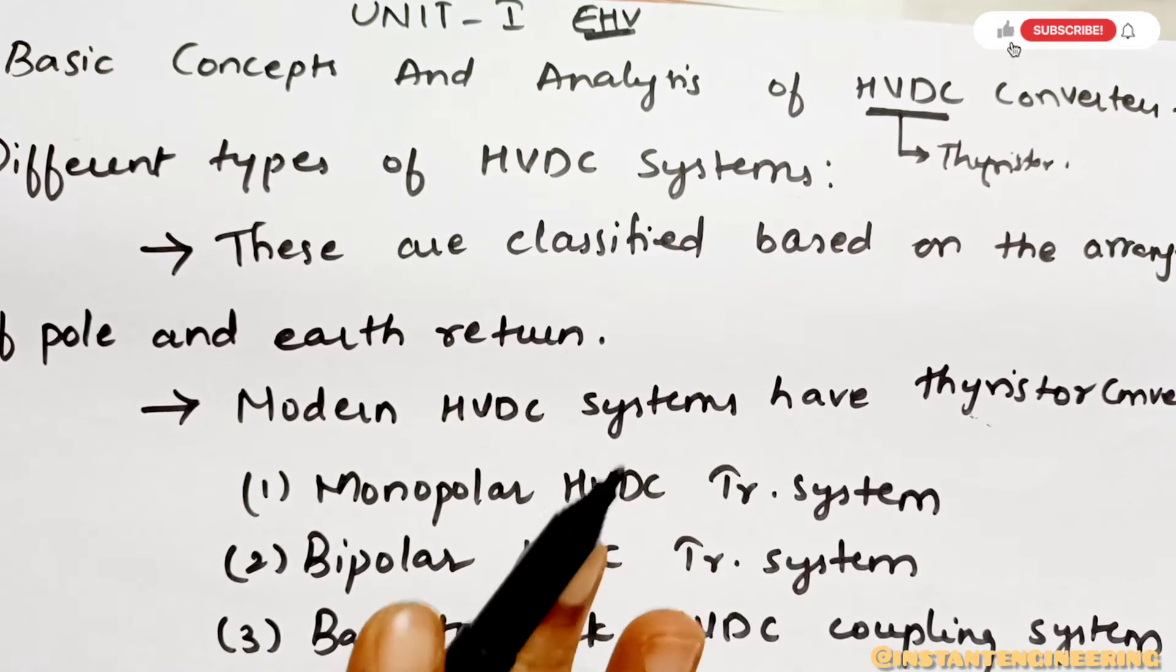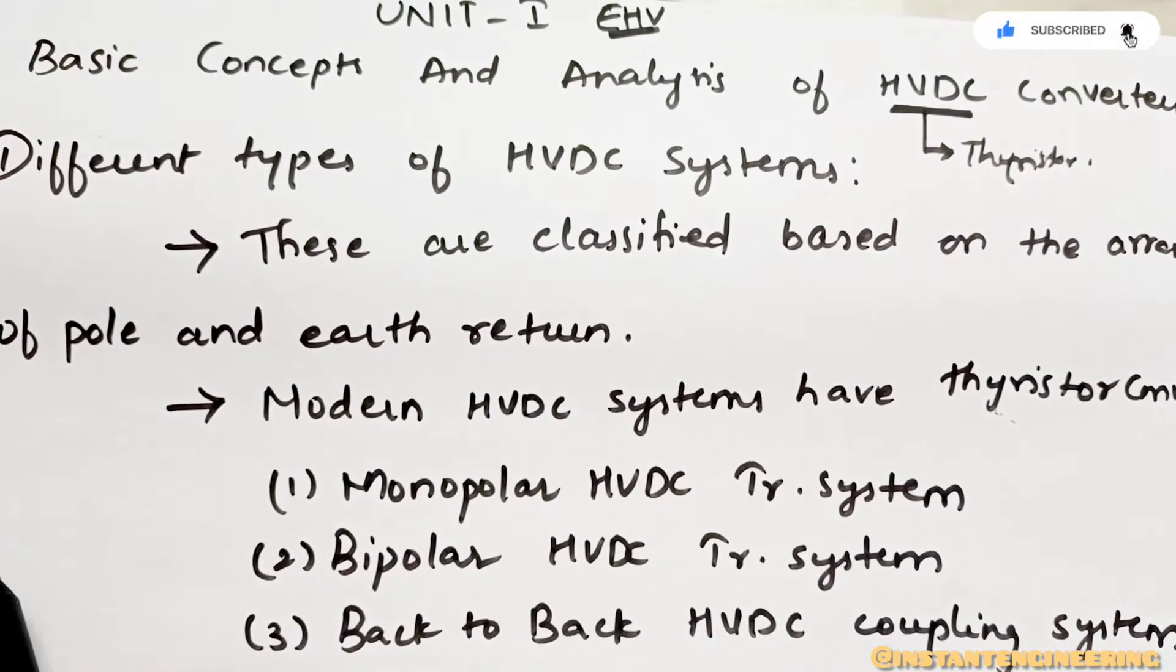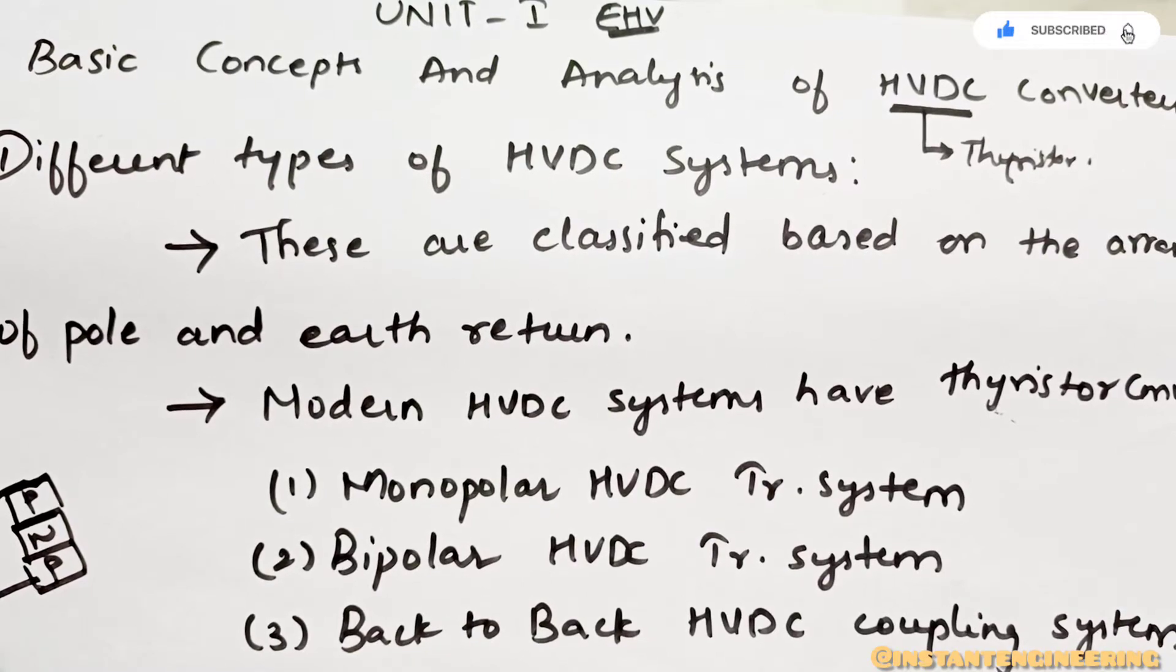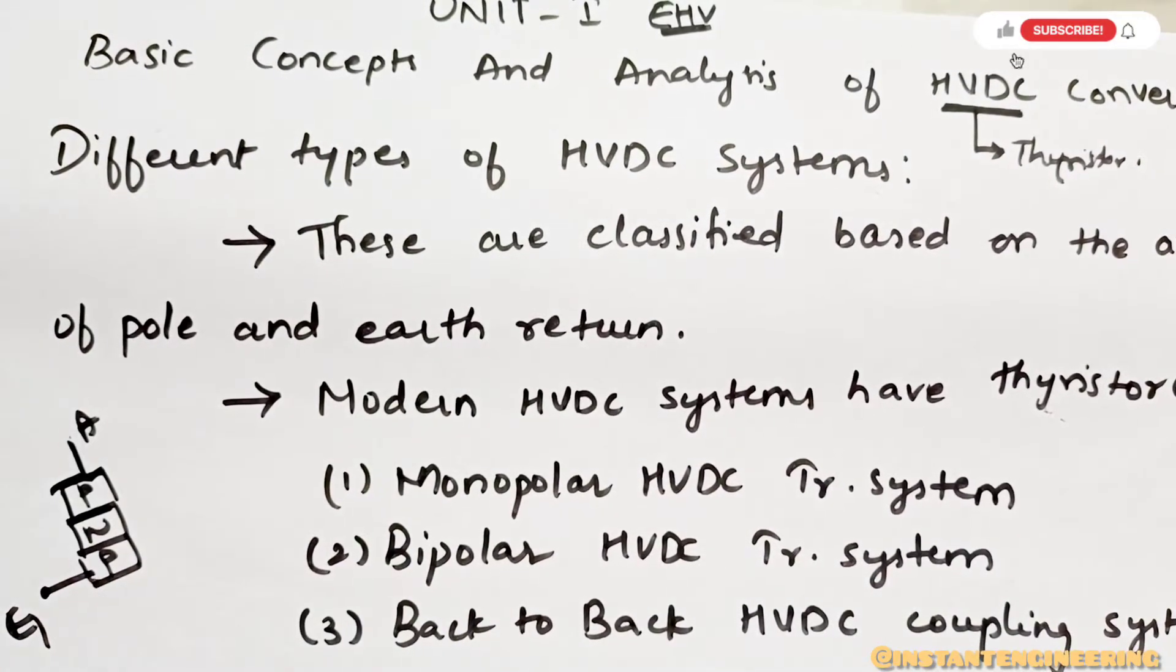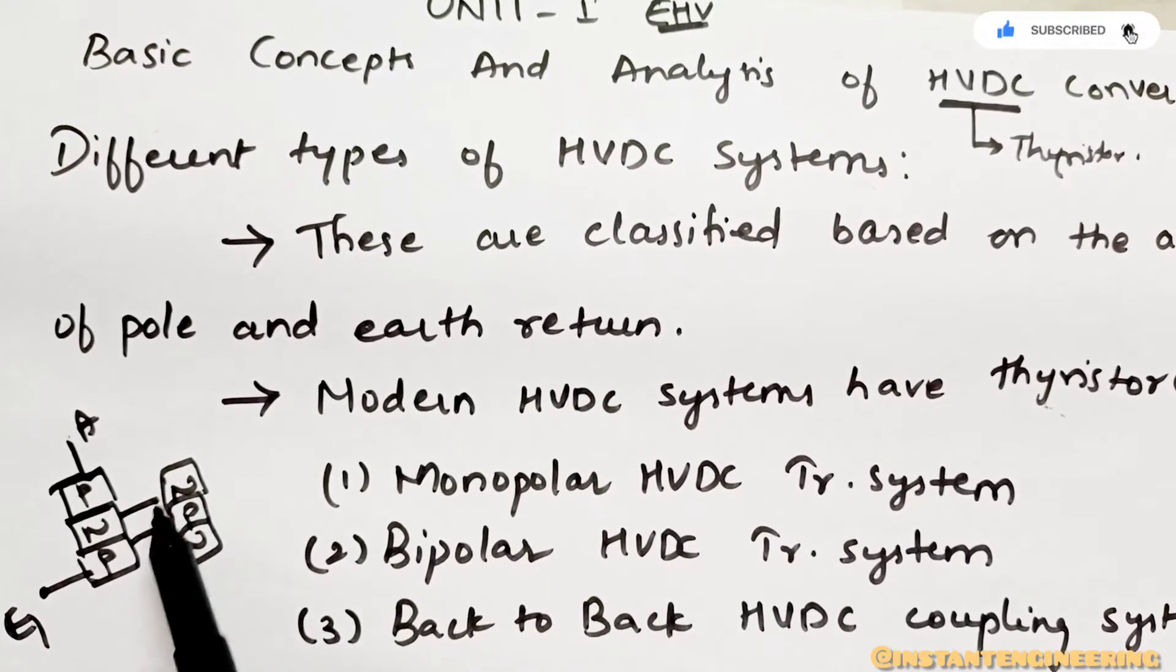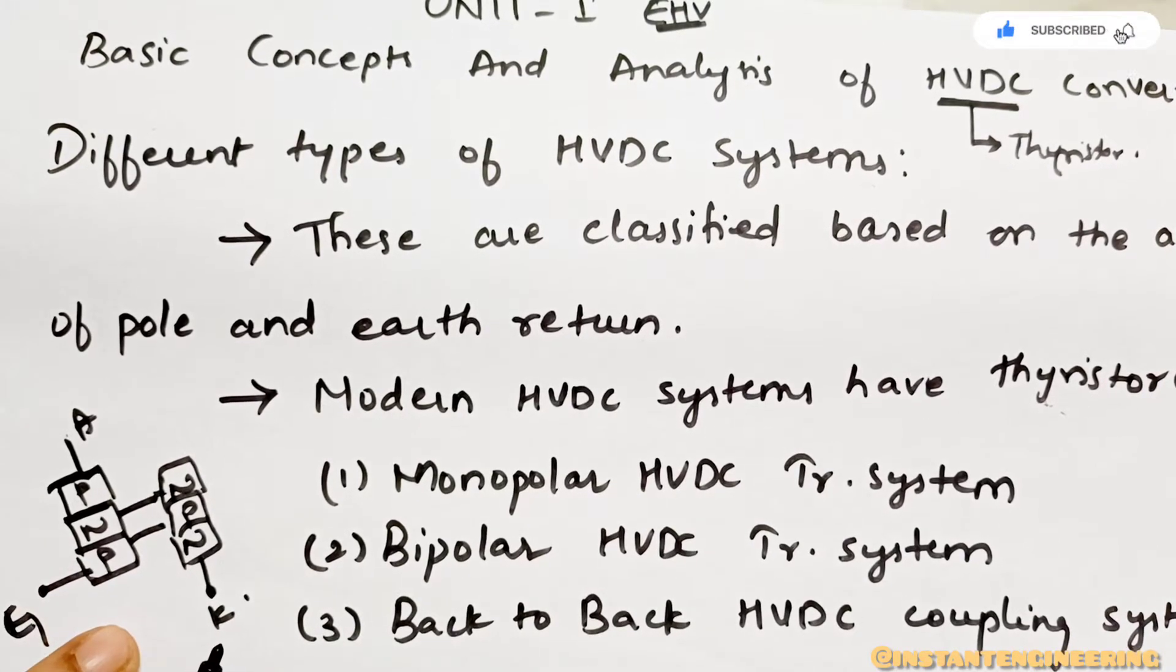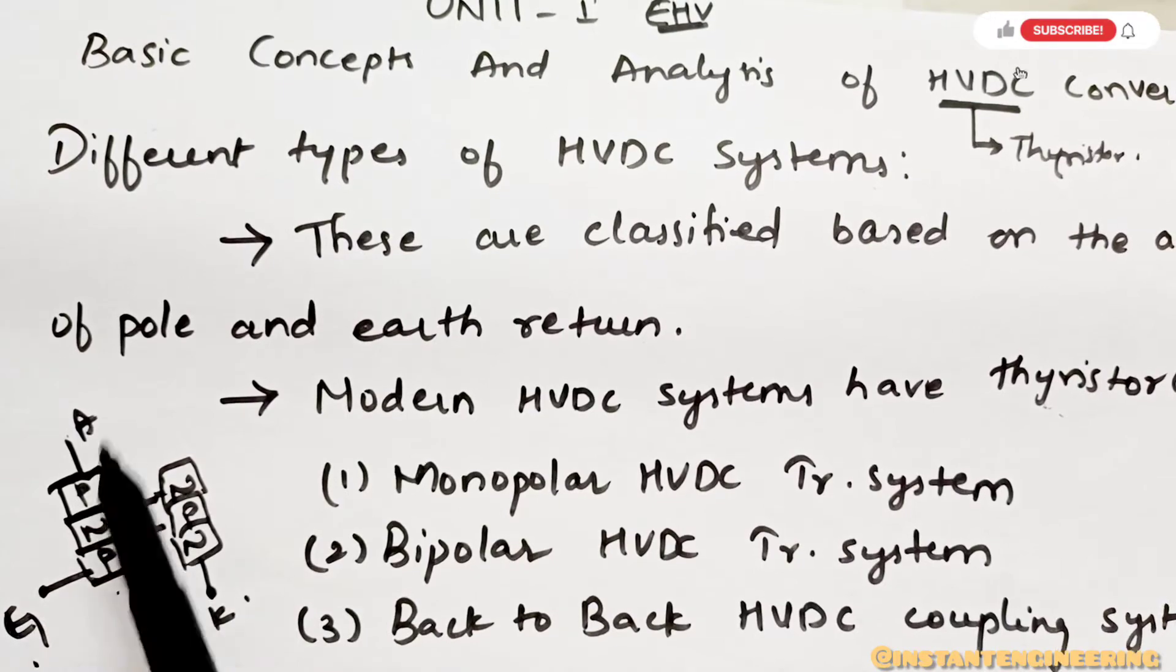Thyristor is nothing but a four-layered semiconductor device. It will have P-type and N-type. Basically it will have three electrodes. I'm just drawing this roughly - P, N, P, and N. You have here three parts mainly: this will be the gate, this is the anode connection, and here the cathode. So you have to say it's a four-layered device consisting of P-type and N-type with three electrodes: gate, anode, and cathode.